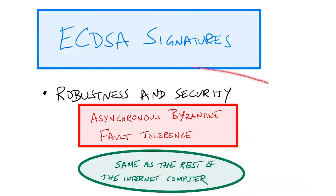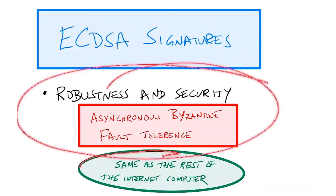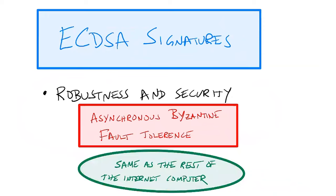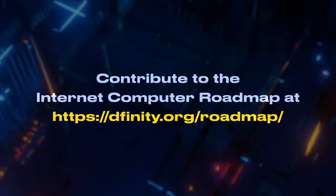Achieving this level of robustness and security really just matches the same level that's achieved in the rest of the Internet Computer. We're making sure that we can achieve the same levels of robustness and security for ECDSA decentralized signing as we already do in the rest of the Internet Computer. That's the end of my talk — I hope I was able to give you a brief introduction to Chain Key Cryptography in general, and also to show you some of the exciting things we're working on in extending Chain Key Cryptography to enable new decentralized signing schemes. Thank you.